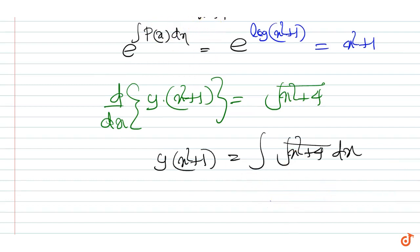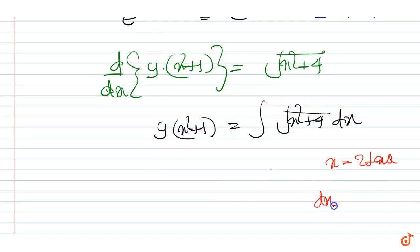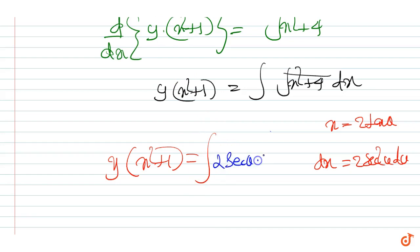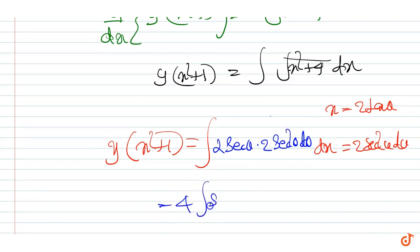Now let x = 2tanθ, so dx = 2sec²θ dθ. Therefore y(x² + 1) = ∫√(4tan²θ + 4) · 2sec²θ dθ, which simplifies to 4 times the integral of sec³θ dθ.